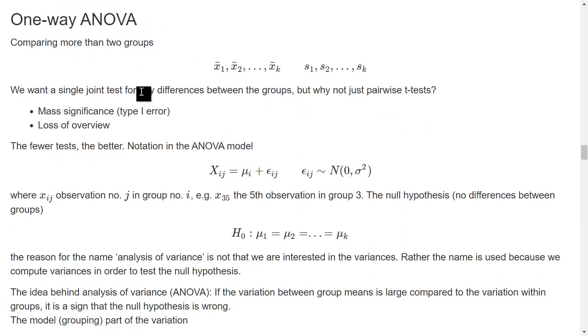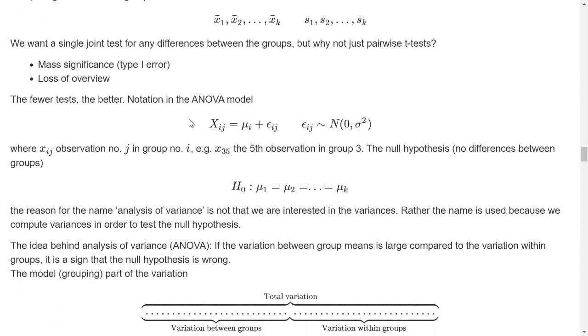This is a situation where I have k different groups. And again, I assume normality in each of these, so I compute k different sample means and k different sample variances. I want to do only one test.